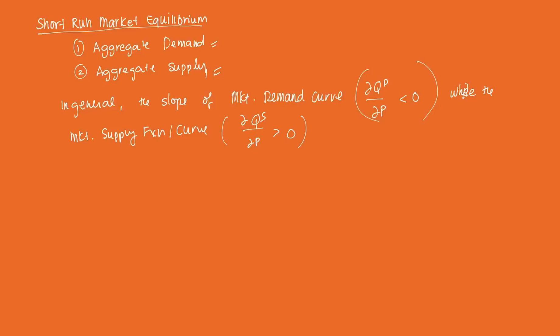The equilibrium price and quantity combination must satisfy both the market demand and the market supply functions. Since the good in this perfectly competitive market is homogenous, only one market price will prevail. So at equilibrium, QD — your market demand — must equal QS — your market supply.